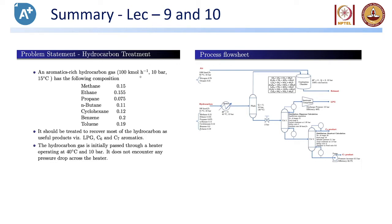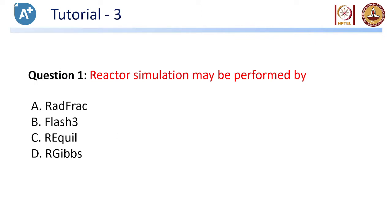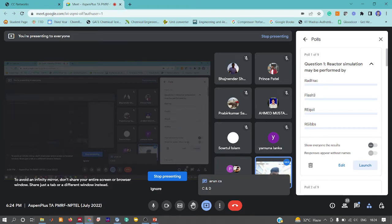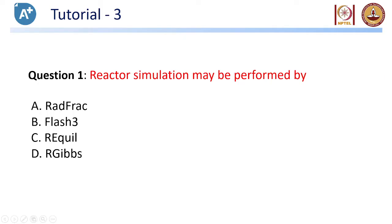The professor also took an example of hydrocarbon treatment where he spent a couple of lectures. Now I have a few quiz questions. The first question: 'Reactor simulation may be performed using' - the options are Rate-Frac, Flash 3, R-Equilibrium, and R-Gibbs. Please respond on the poll. For those who have responded, I also want you to answer what each option is used for - for example, what is Rate-Frac for, what does Flash 3 do? Try thinking about what the other two options do.